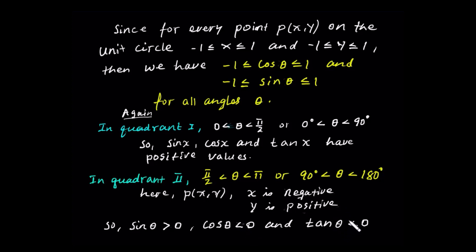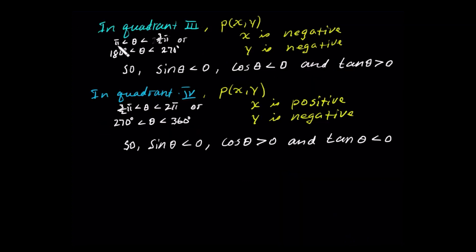So in quadrant 2: sine — y value is positive, so sine is positive. Cosine — x value is less than 0, so cosine is negative. Tangent — y over x: y is positive, x is negative, so y over x is negative — tangent has negative value. In quadrant 3, x is negative and y is also negative. So sine is negative, cosine is negative, and tangent will have positive value, because negative over negative is positive.